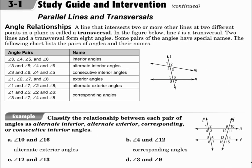The angles outside the two lines are called exterior angles, like angles 1 and 2, and angles 7 and 8. The exterior angles on opposite corners are alternate exterior angles, like angle 1 and angle 7, or angle 2 and angle 8 — on opposite corners outside the two lines.